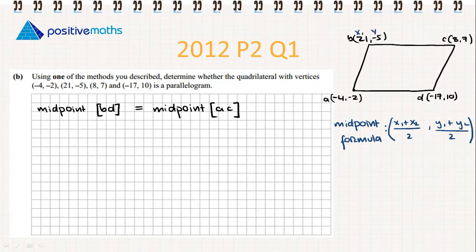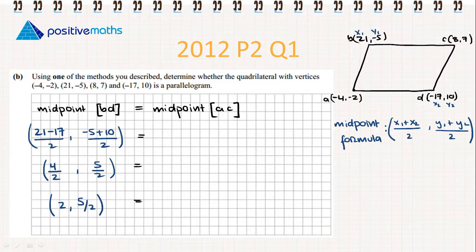Let's work with BD first. I'll label my x and y values. The midpoint of BD is (21 - 17)/2 and (-5 + 10)/2. 21 minus 17 gives 4 over 2, minus 5 plus 10 is 5 over 2. When I simplify, my midpoint is (2, 5/2).